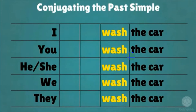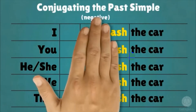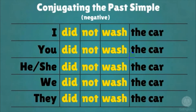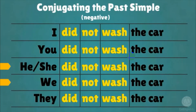Conjugating the past simple negative: I did not wash the car. You did not wash the car. They did not wash the car.